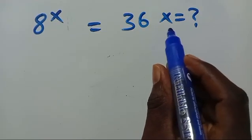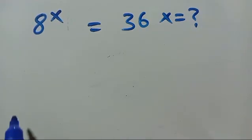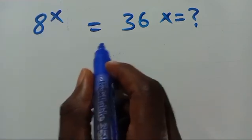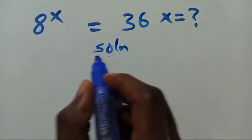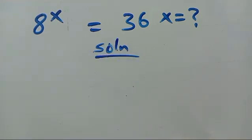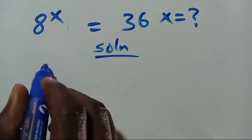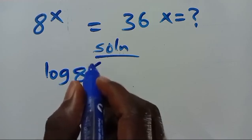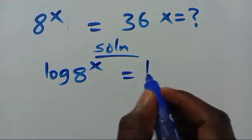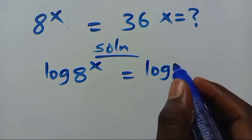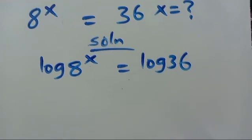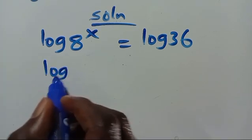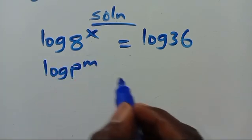What is the value of X? We have 8 to the power of X equals 36. Let's find the solution. We introduce log to both sides: log 8 to the power of X equals log 36.